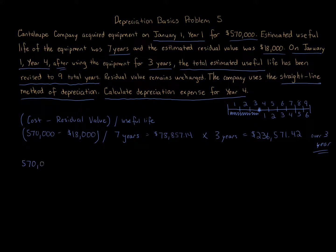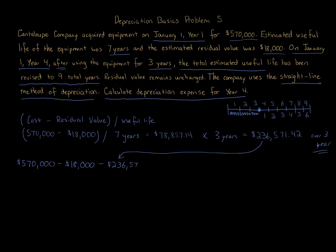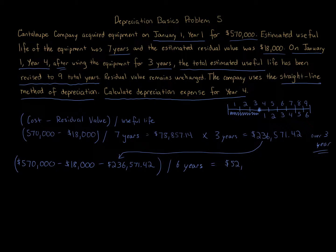What we're going to do is take the $570,000 cost, minus our $18,000 residual value that we must keep at the end, and subtract the $236,571.42 that's already been depreciated. That gives us our remaining depreciable amount, and then we divide that by the six years remaining — since we're doing this at the beginning of Year 4. That equals $52,571 per year for Years 4, 5, 6, 7, 8, and 9.